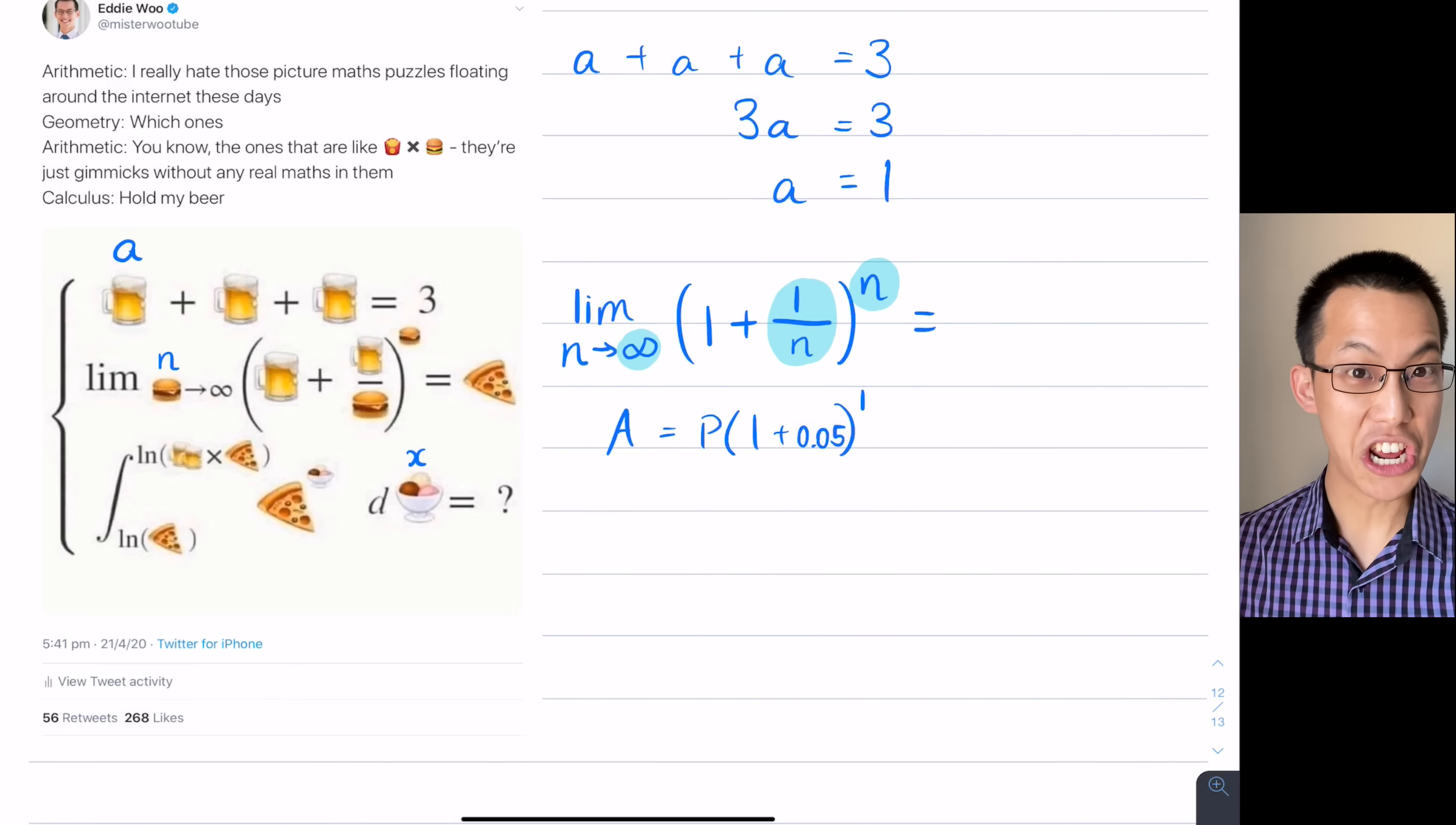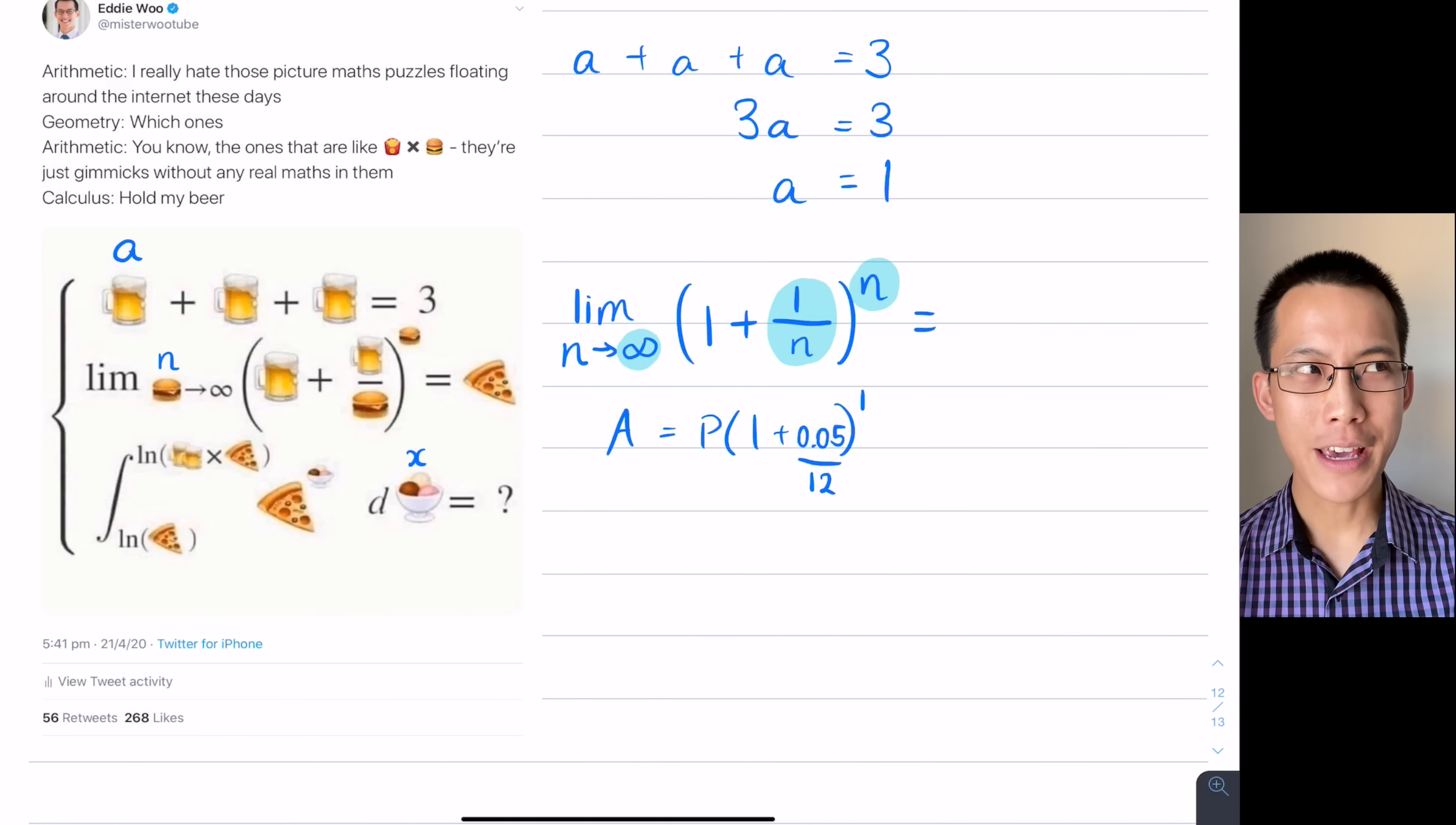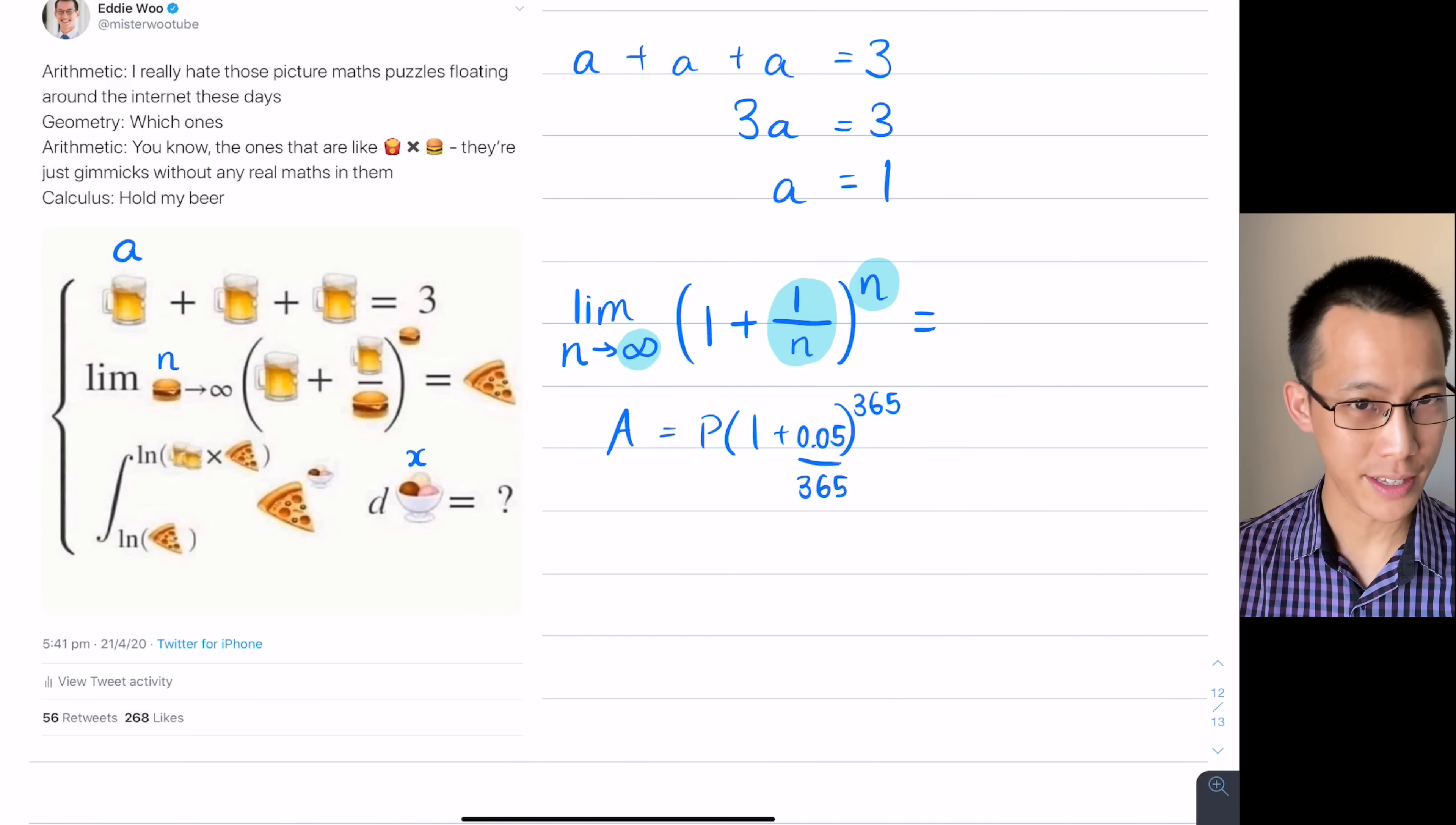So where this often comes up is if you were changing the compounding period of a compound interest loan. If for example, you had an interest rate of 5%, let's suppose that was our interest rate. And then I ask you, what happens in a year? But as I increase the compounding period, like if I said, let's do this every month instead of once a year, you wouldn't get 5% interest every month, you would get one-twelfth of that. But then the upshot is you get that interest applied 12 times.